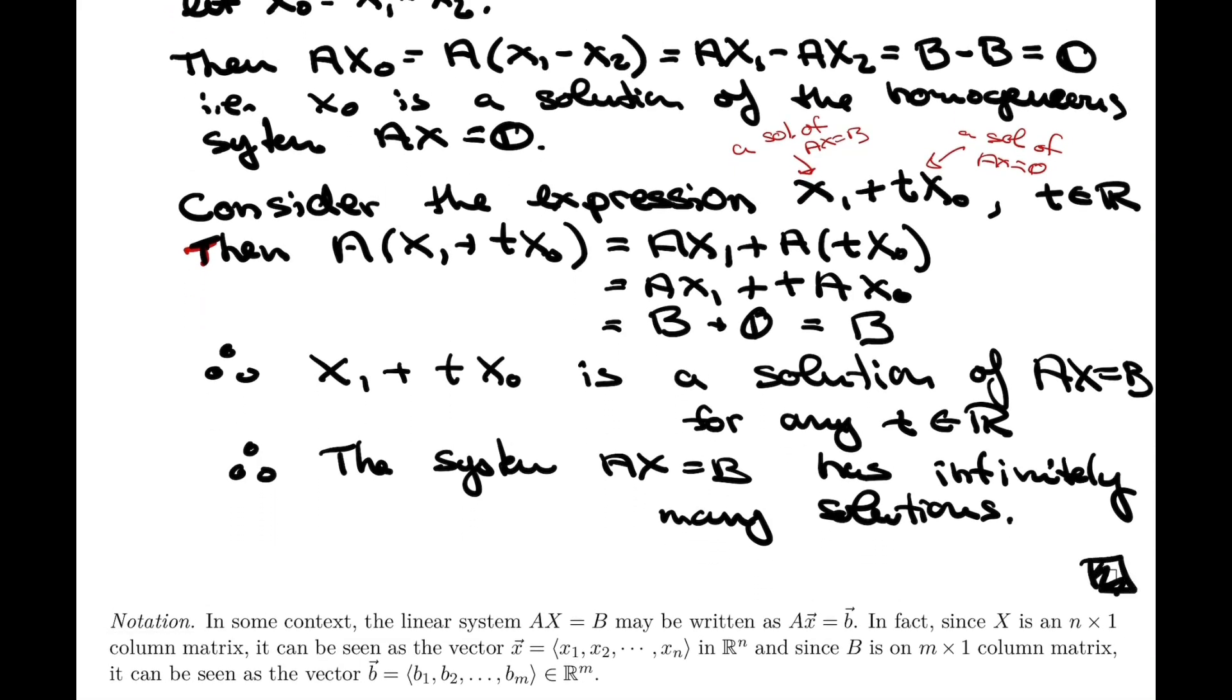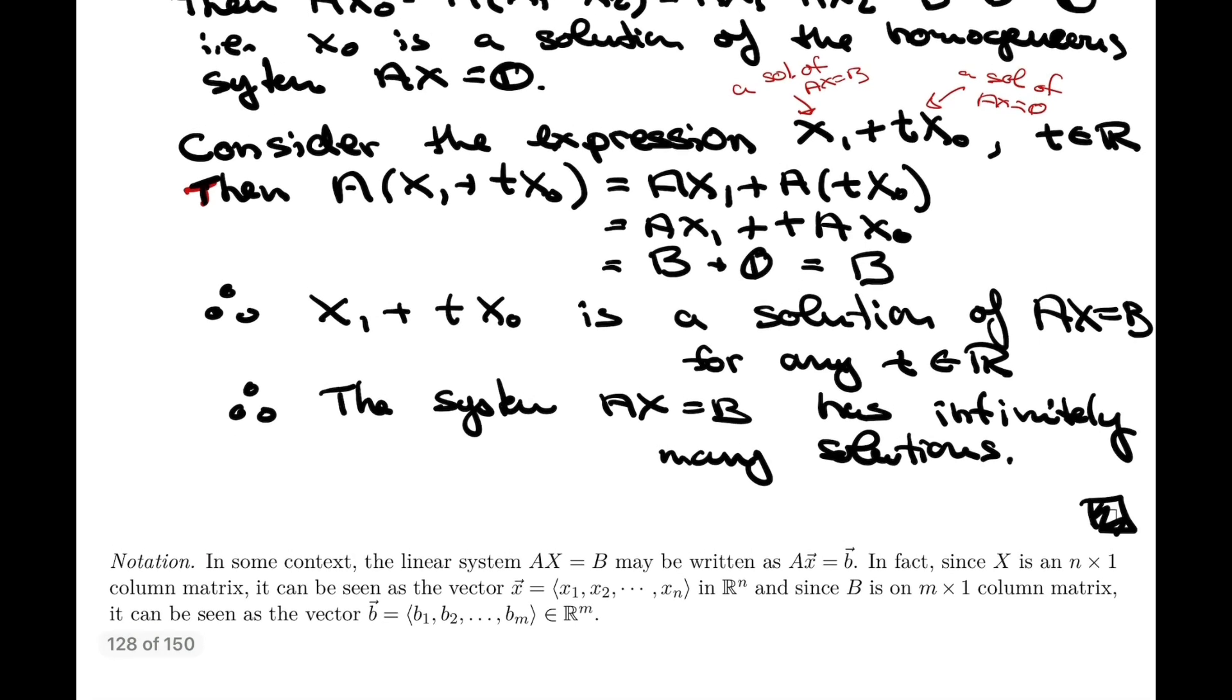And I'll conclude this part. So this concludes the proof. And I'll simply conclude this video by attracting your attention to a little piece of notation here, which is that in some contexts, instead of using this expression, AX equals B, which is a way of seeing a linear system as a matrix equation. In some contexts, you'll see it written like this, where it's a matrix times a vector equals another vector.